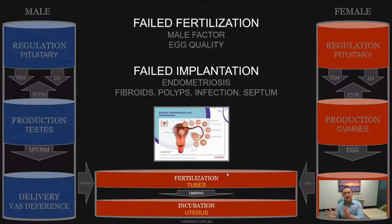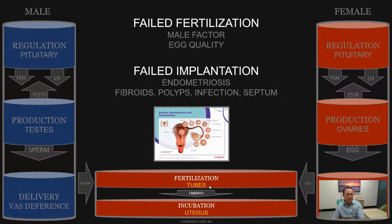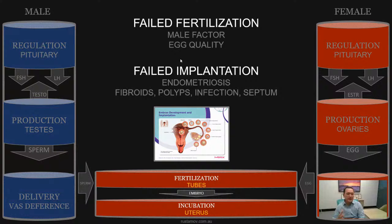Once sperm and eggs are produced, two more steps are needed to achieve a successful pregnancy: fertilization of the eggs with sperm in the tube, and implantation and incubation of the embryo in the uterus. Failed fertilization of eggs in the tube is usually linked to male factor infertility or quality of the eggs. Implantation of the embryo in the uterus is linked to endometriosis or structural problems — usually fibroids, polyps, infection, or septum.